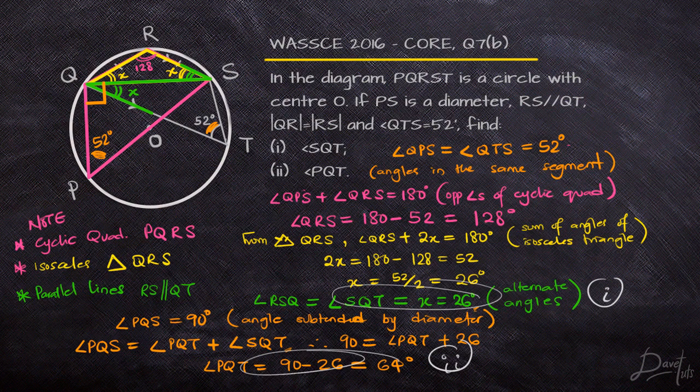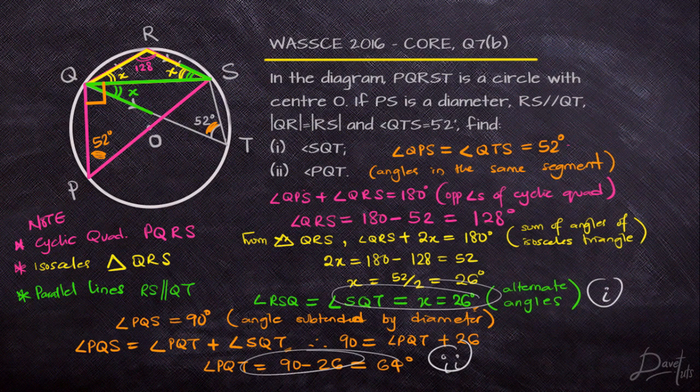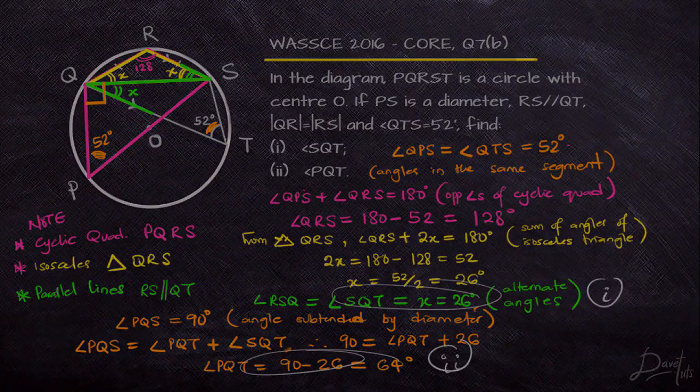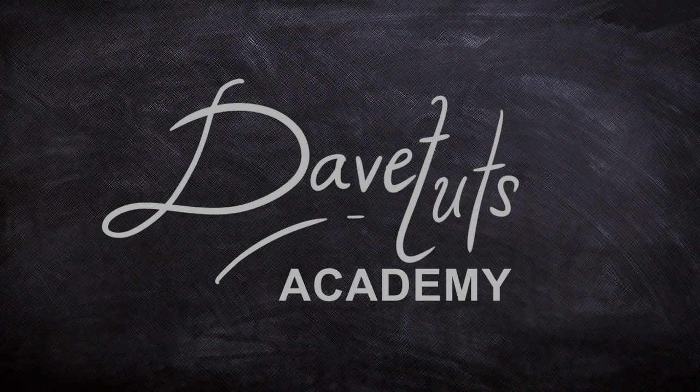I cannot over-emphasize the importance of understanding the guidelines. You need to know the properties of your circle, and be able to observe and know which theorems to apply — cyclic quadrilateral properties, isosceles triangle properties, and alternate angles. That's what we've done today. This is Deep Tooth Academy — if you like the video, share, like, subscribe, and until next time, God bless you.